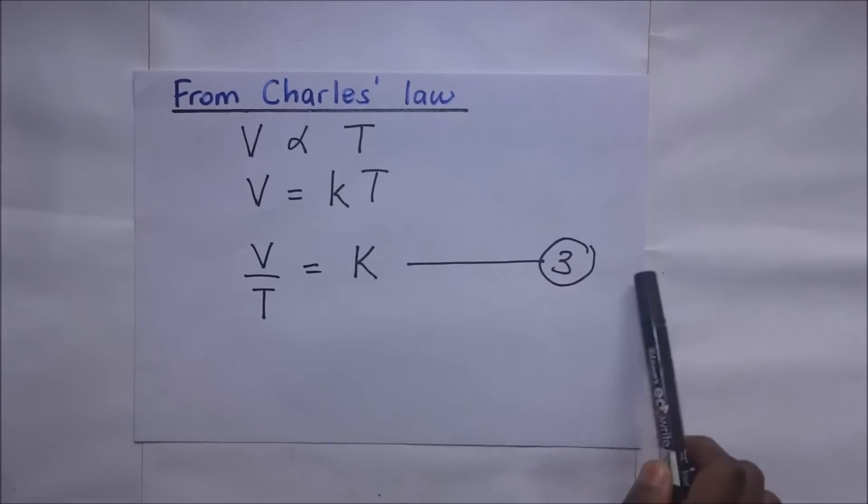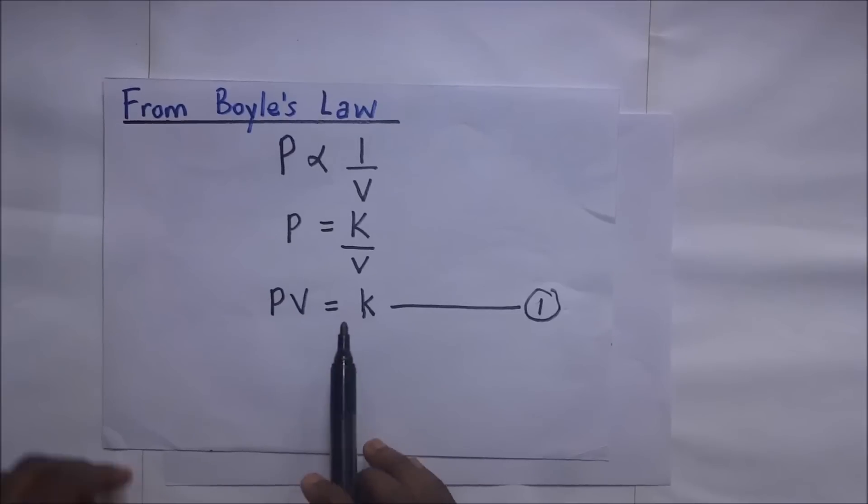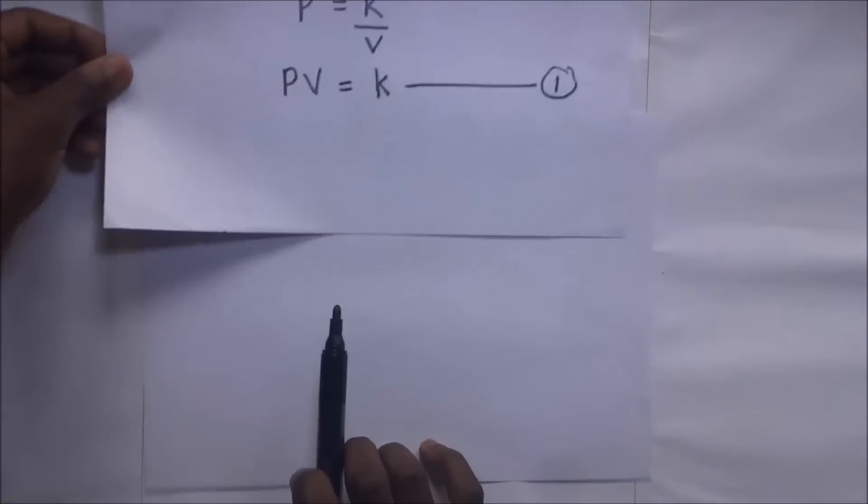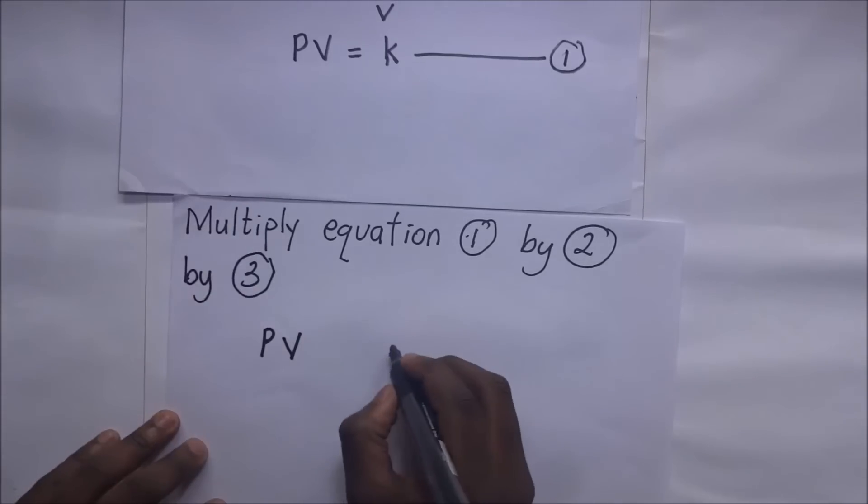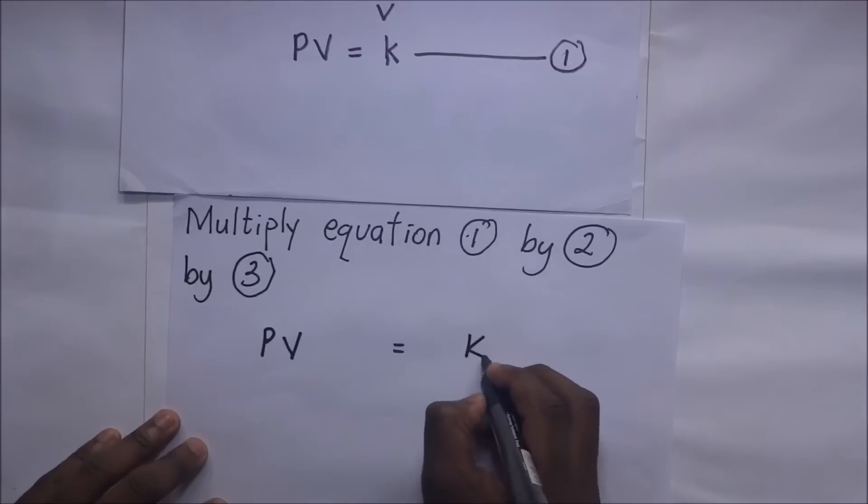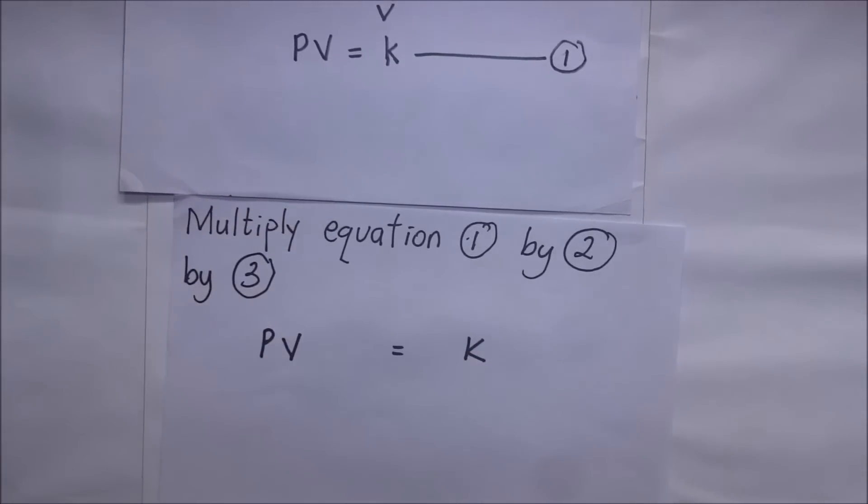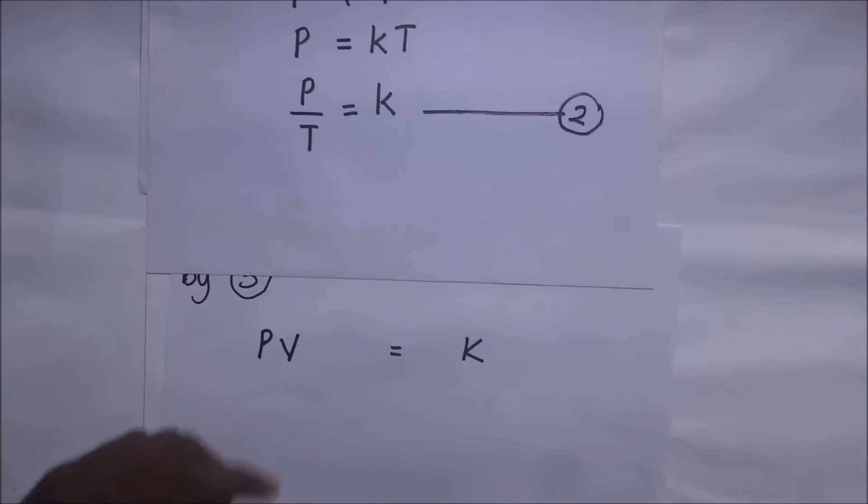This is Charles's law and this is our third expression. So we are going to get these three expressions and multiply them all. When we multiply all of them, we shall end up with the ideal gas equation. The first equation was PV is equal to K, so we get PV over K. We might multiply this by K.